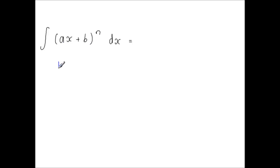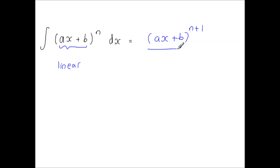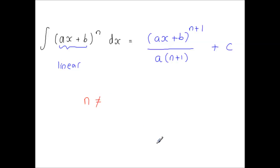The first standard integral for C3 comes from this. What you have here is a linear function raised to a power — a linear function inside the brackets raised to a power. So when you integrate, you have your linear function as it is inside the brackets, increase the power by 1 to the power of n plus 1, and then divide by this new power and also by the coefficient of the x term, which is a, plus some constant of integration. This rule holds for all values of n, not including n equals minus 1.